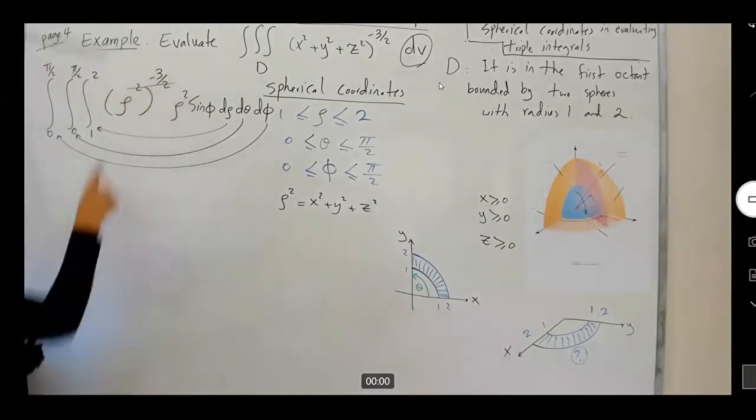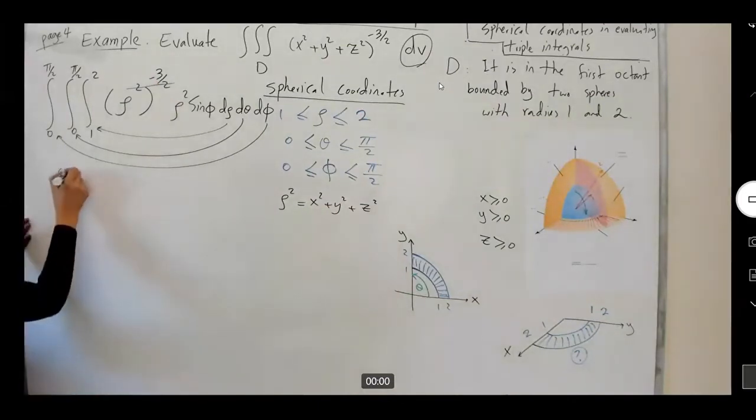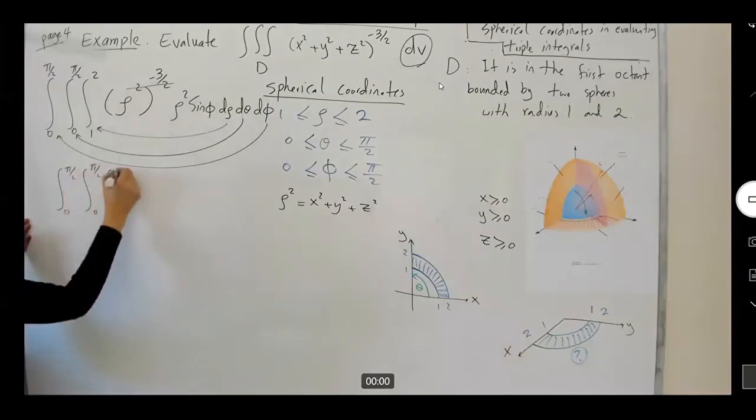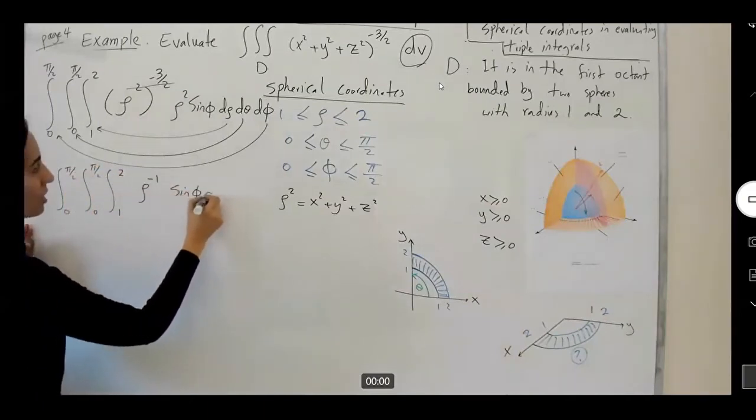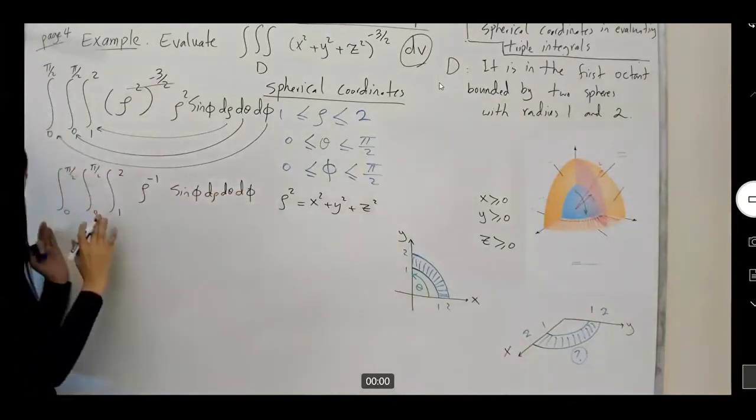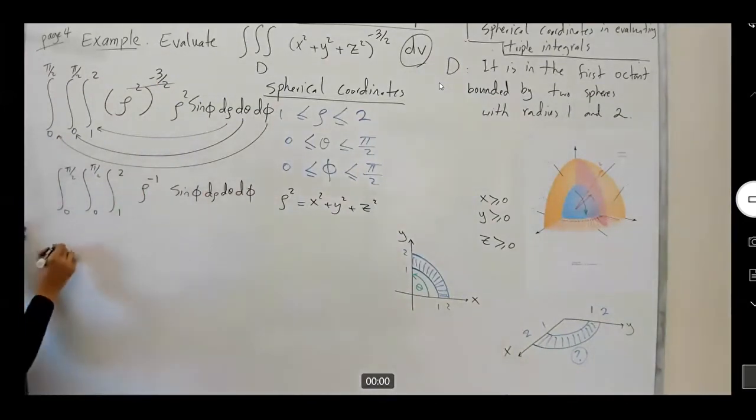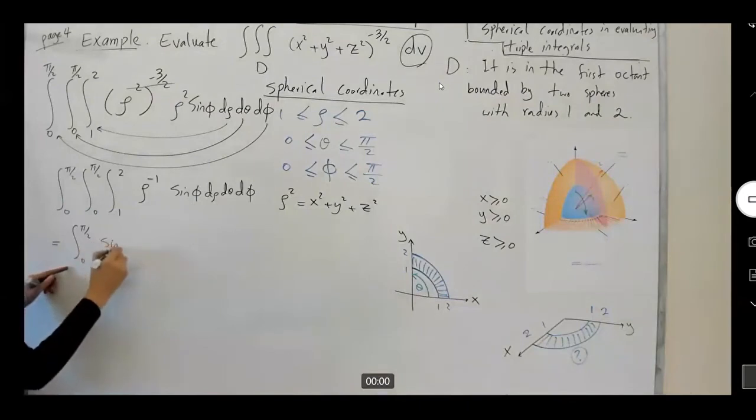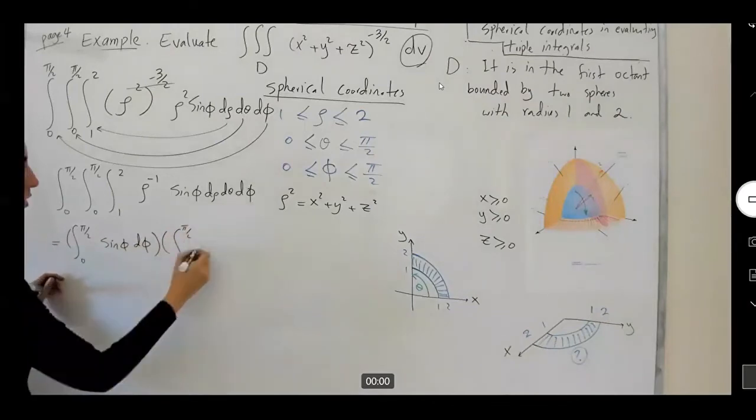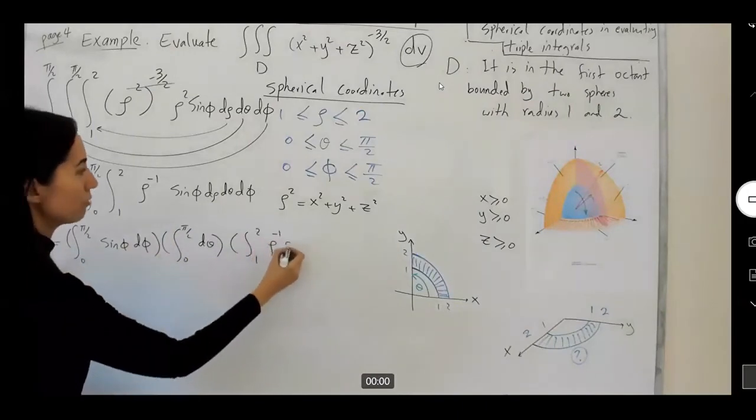Let's try to simplify that. You can cancel out the rho squared. Rho to negative three, rho squared gives you rho to negative one. So here you have integral zero to pi over two, integral zero to pi over two, integral one to two, rho to negative one, sine phi d-rho d-theta d-phi. There is no dependence between phi and rho. So you can separate these integrals. You have integral zero to pi over two sine phi d-phi. Then I have zero to pi over two d-theta. And then I have my integral one to two, rho to negative one d-rho.